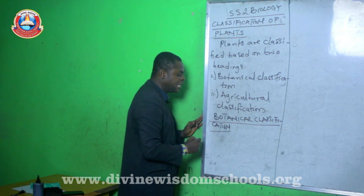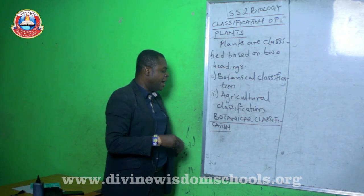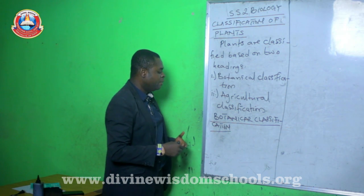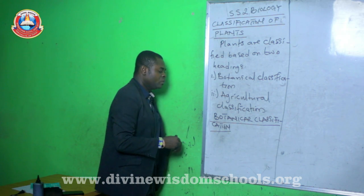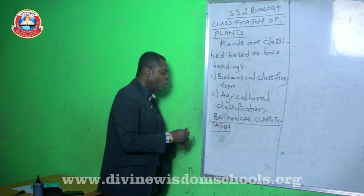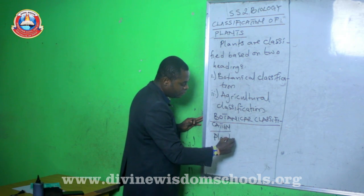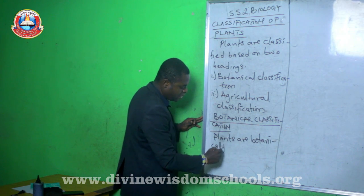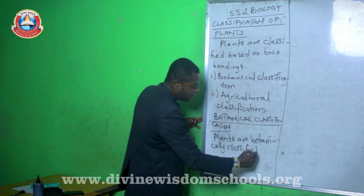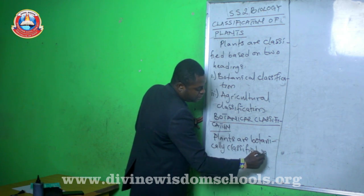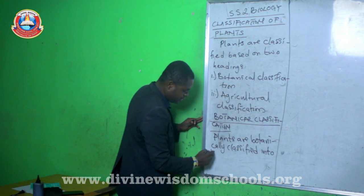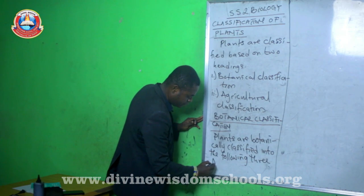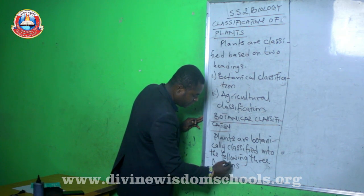When we're talking about botanical classification, we are talking about a method of classification as stipulated by botanists — people that study plants. Based on this, plants are botanically classified into the following three divisions.